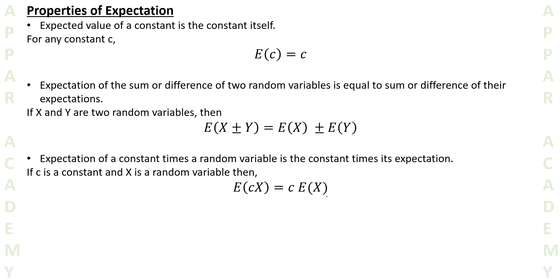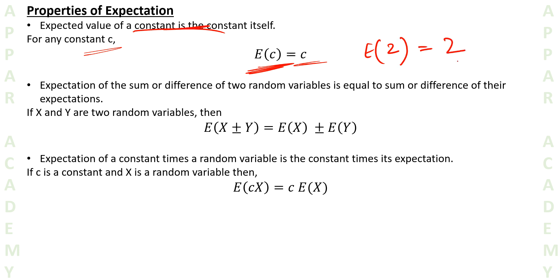Now we have some properties of expectation. The first property says the expected value of a constant is the constant itself. So for any constant c, E[c] = c. For example, the expectation of 2 is always equal to 2.